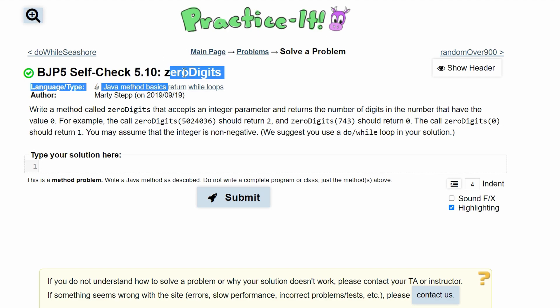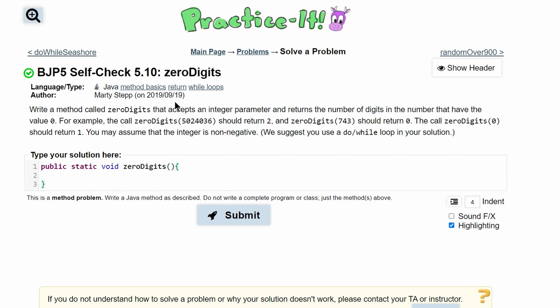Practice-it self-check 5.10 zero digits. We're asked to write a method called zeroDigits, so we'll have public static void zeroDigits with our parentheses and then our brackets. We accept an integer as a parameter, so we'll call this int x.